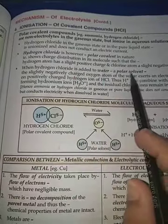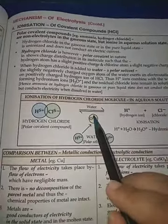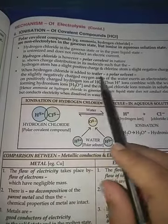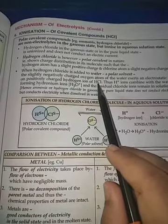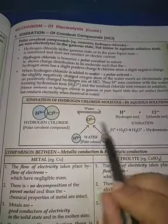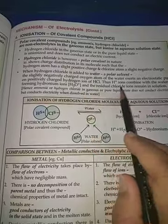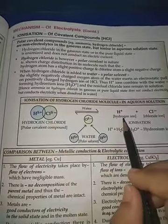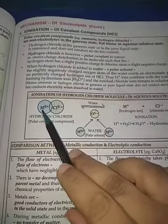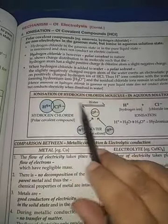When hydrogen chloride is added to water, a polar solvent, the slightly negatively charged oxygen atom of water exerts an electrostatic pull on the positively charged hydrogen of HCl. Thus, H⁺ ions combine with water to form H₃O⁺, the hydronium ion. The residual chloride ion remains in the solution. So in aqueous solution, hydrogen exists in the form of H₃O⁺ because H⁺ combines with the oxygen of water to form H₃O⁺, while Cl⁻ remains separated in solution.